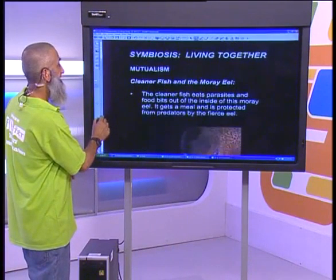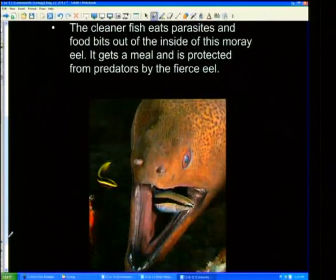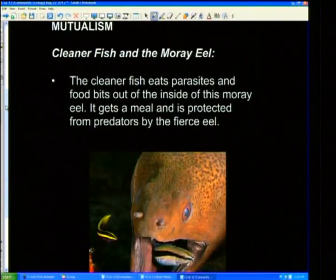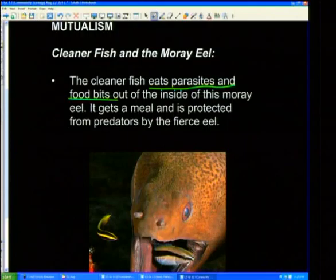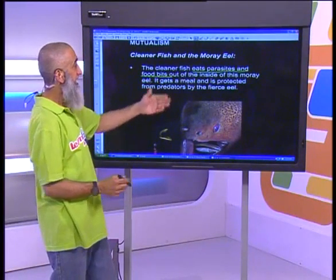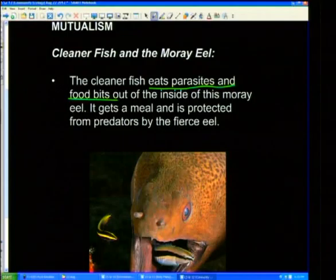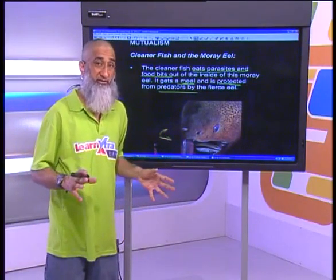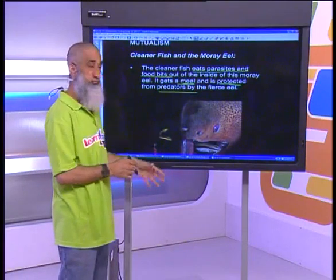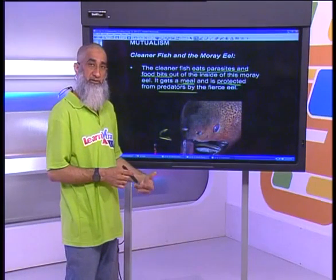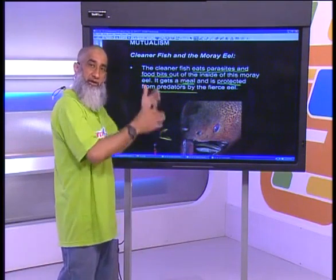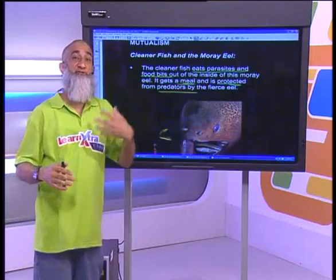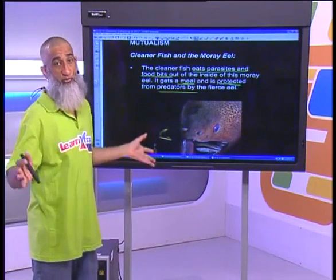Another example is the cleaner fish and the moray eel. The cleaner fish eats the parasites and food bits from the inside of the moray eel — very much like what we said about the bird and the crocodile earlier. The cleaner fish gets its meal and is protected from predators by the fierce eel: it gets protection and food. Meanwhile, the big guy gets a cleanup, and the cleaner fish also gets rid of parasites in the fish. So they're both benefiting.